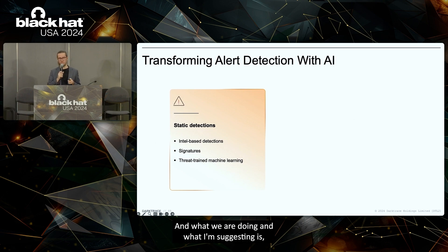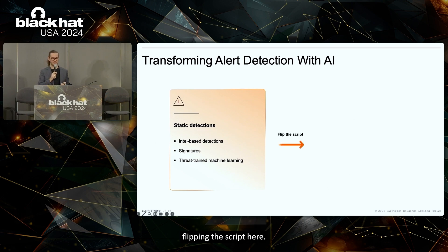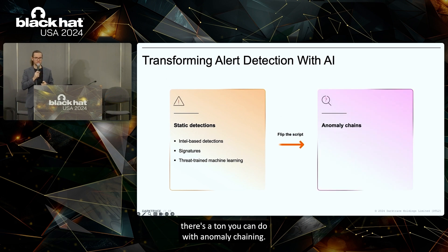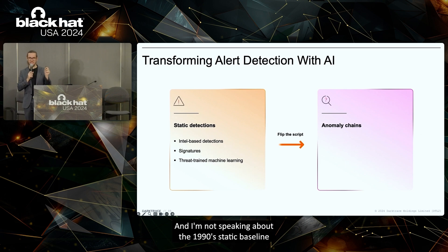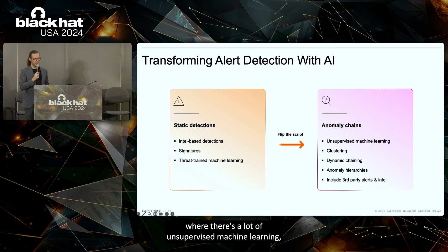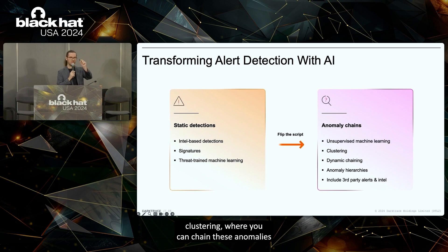What we are doing — and what I'm suggesting — is flipping the script. So instead of looking at static detections and maybe supervised machine learning for threat-based detections, there's a ton you can do with anomaly chaining. And I'm not speaking about 1990s static baseline statistical analysis, but using different layers of anomalies with a lot of unsupervised machine learning and clustering, where you can chain these anomalies dynamically together.